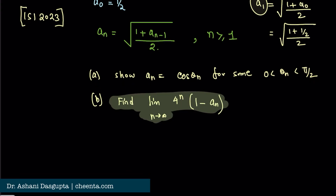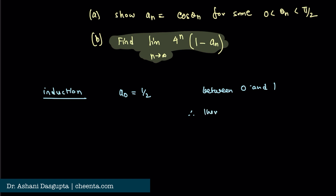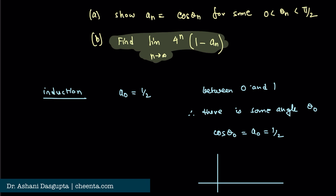The first step is very easy — we will use induction, and it's really a one-line thing. a_0 = 1/2, which is obviously between 0 and 1. If you remember the picture of the cosine graph: at 0 degrees it's 1, and at π/2 it's 0. So somewhere in between, for the value 1/2, we will find an angle θ_0. The actual value of θ_0 is not that important.